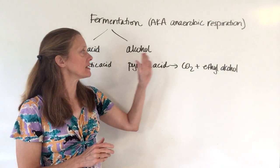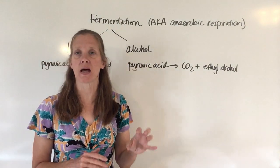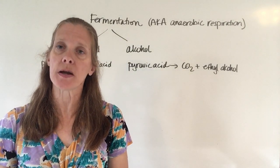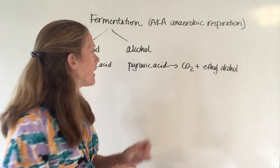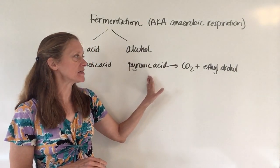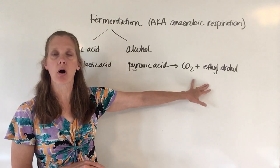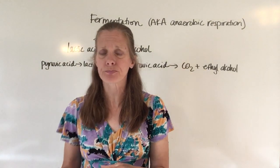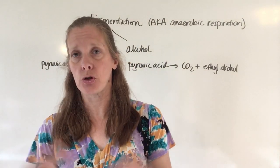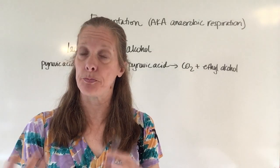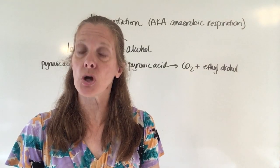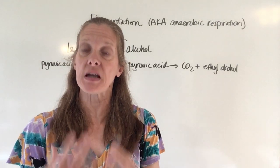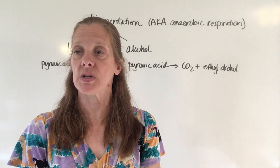The other type of fermentation is alcohol fermentation, done mostly by yeast, which we will study more when we get into the chapter on fungi. In this type of fermentation, pyruvic acid is turned into ethyl alcohol and carbon dioxide. When you make bread with yeast, the yeast reacts with the sugar and if everything goes well you put the bread in the oven and it rises — it rises because of the carbon dioxide being released in the reaction.